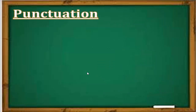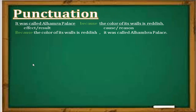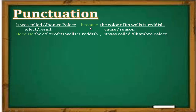Now let's look at punctuation. Consider this sentence: 'It was called Alhambra Palace because the color of its walls is reddish.' These are two clauses — one representing the effect and one representing the cause. There is no comma here because the word 'because' already separates the two clauses.